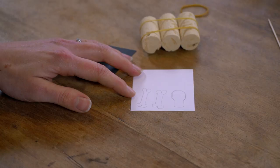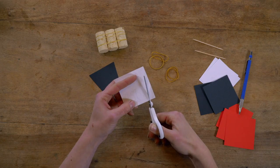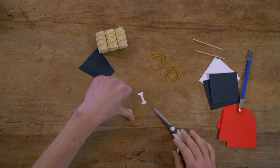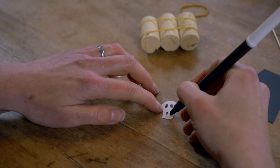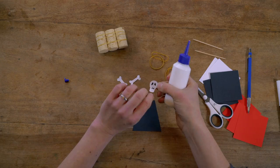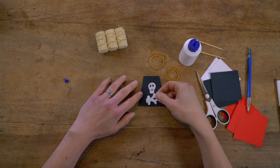Draw a skull and crossbones on white paper and carefully cut it out. Add scary detail to your skull, then glue the skull and crossbones onto your black sail.